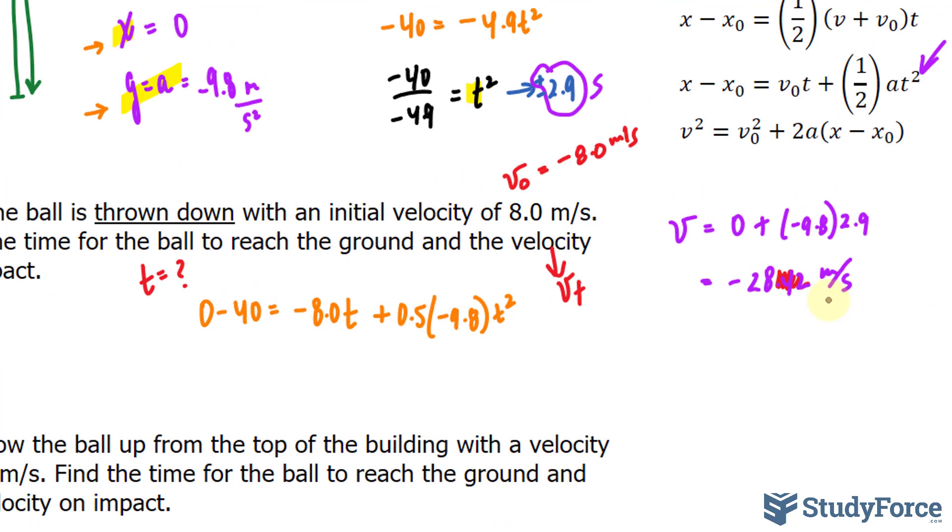This looks like a quadratic, so we'll need to use the quadratic formula. I will simplify that part, that's negative 40, and then take it over. So I have 0 is equal to 0.5 times negative 9.8 t squared. That part doesn't change. Minus 8.0 t plus 40.